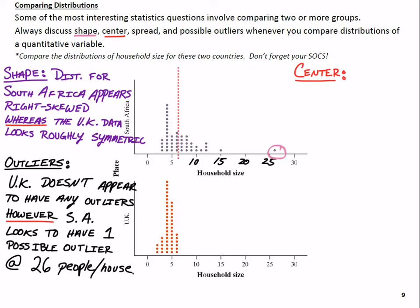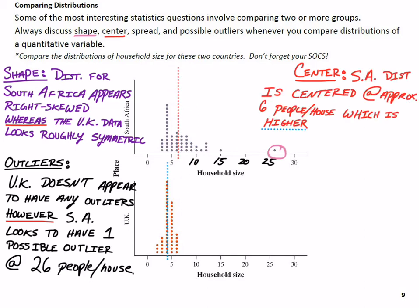And in doing that, if I can just go ahead and make a dotted line here. It looks like the median, the middle observation for South Africa is at about six people per house. And what's important to note, that looks like it's definitely higher than the median for the UK distribution. I put a dotted line here as well. The center of this distribution for South Africa is centered at approximately, not just the number six, but the context piece as well. There's six people per house, which is higher than the UK distribution.